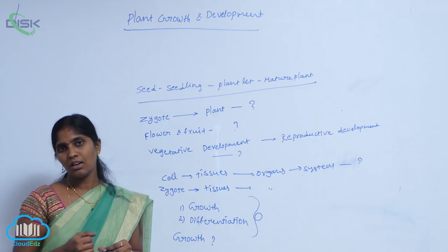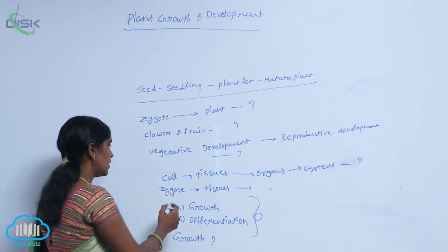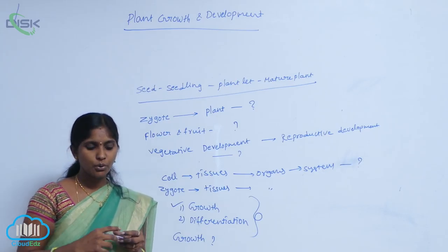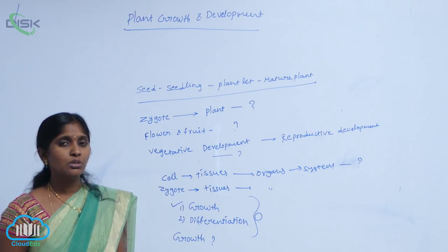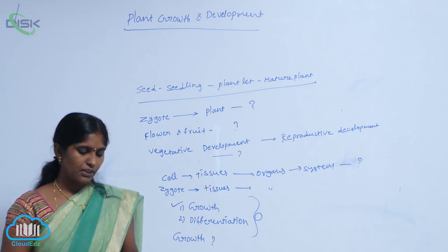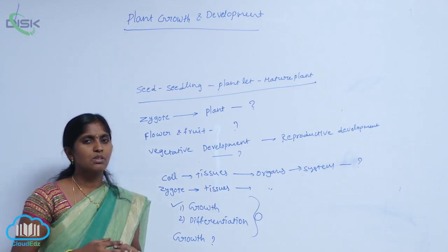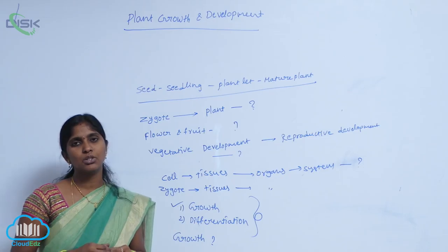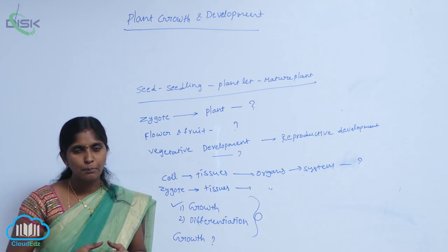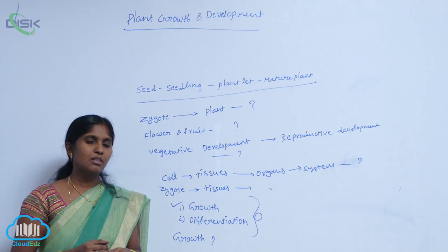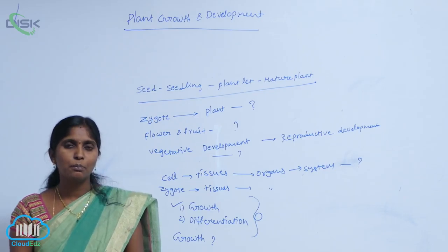Growth is permanent and irreversible — an increase of a cell, tissue, part of the body, or organ. That is called growth. Can we determine growth? Yes, we can determine growth. Growth is shown by some tissues — the meristematic tissues. When meristematic tissues are present in the plant body, they undergo rapid multiplication and produce tissues for further development of the plant body.